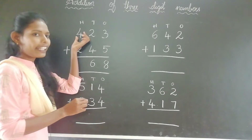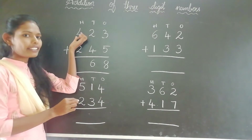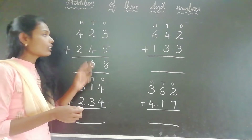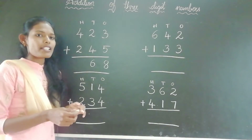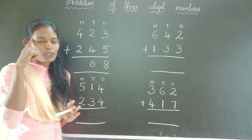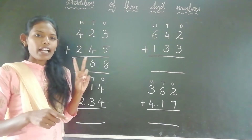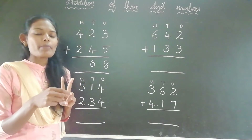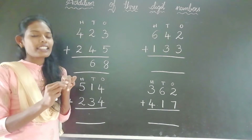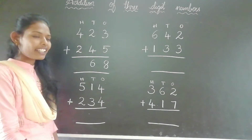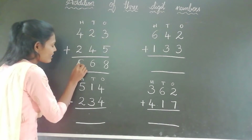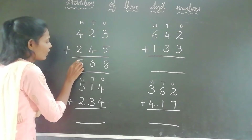Now we are adding the hundreds digits. What are the hundreds digits here? 4 and 2 — these numbers are at the hundreds place. So keep 4 in your mind and take 2 fingers. What comes after 4? 5, 6. The answer is 6.